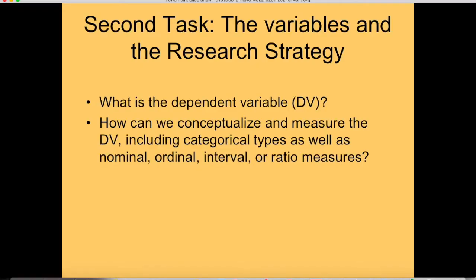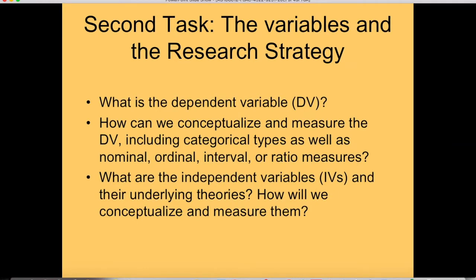A lot of times people spend a lot of effort on defining and measuring the independent variables and they don't put sufficient effort into thinking about what actually is the outcome that they're trying to explain. How do I measure it? Will I divide it into different quantities or different types or subtypes? What is it exactly that I'm trying to explain? Then, after we've figured out what it is and how we're going to measure it — nominal, ordinal — we can turn to the alternative explanations and ask what are their independent variables and how do we measure and conceptualize them.